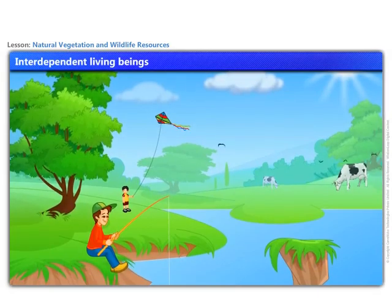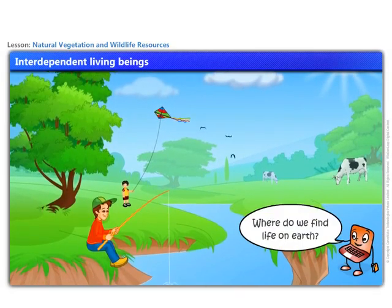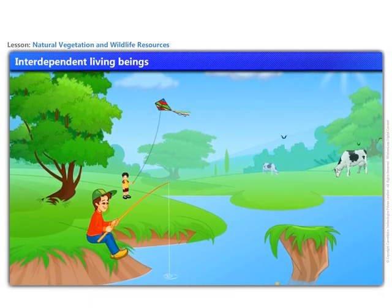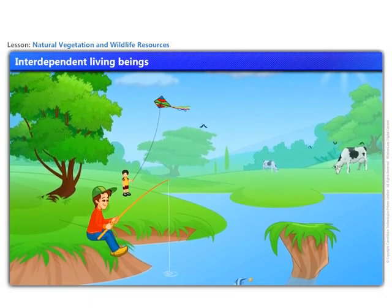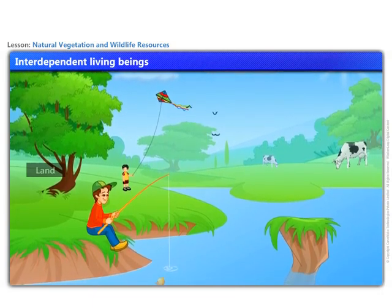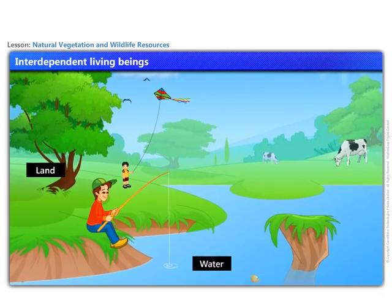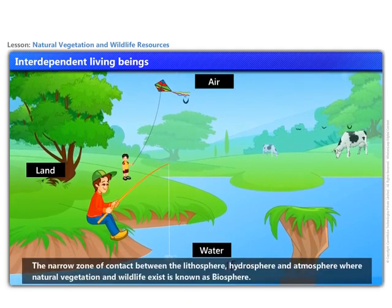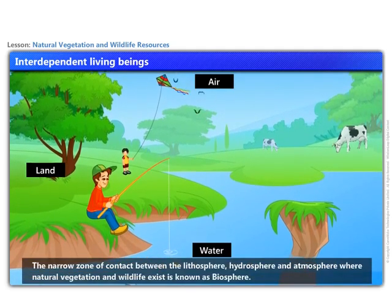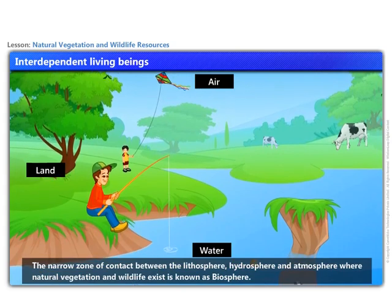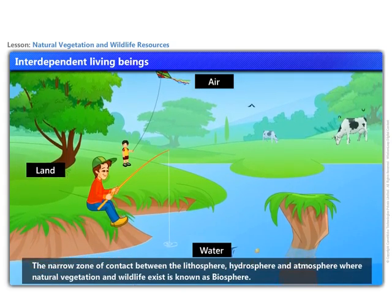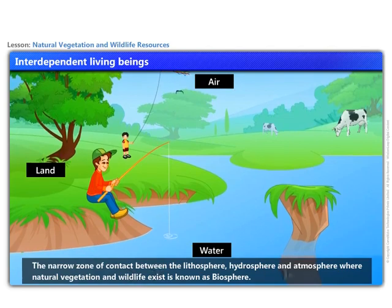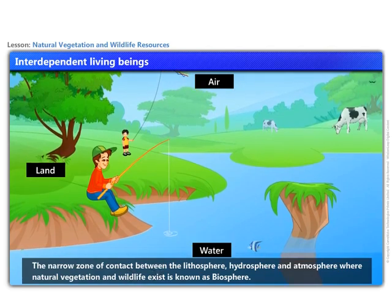Look around your surroundings. Where do you find life on earth? Various plants and animals are found in the three realms of earth: land, water, and air. The narrow zone of contact between the lithosphere, hydrosphere, and atmosphere where natural vegetation and wildlife exist is known as the biosphere.